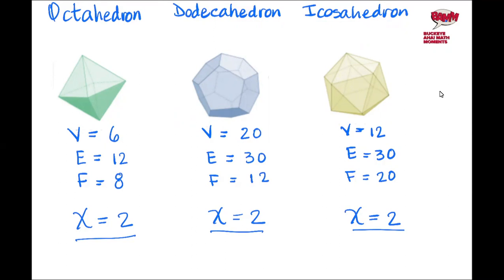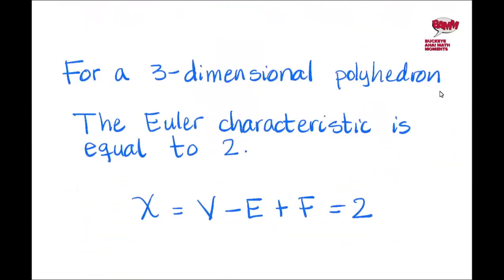And mathematicians proved the following result: that for any three-dimensional polyhedron, the Euler formula, the Euler characteristic, is equal to two.